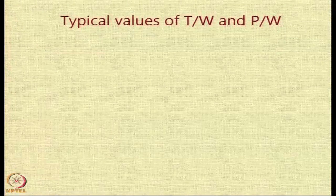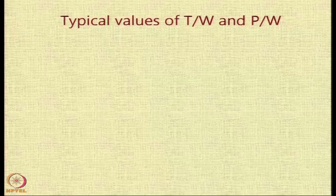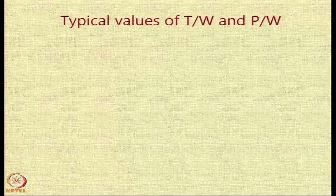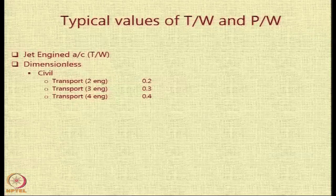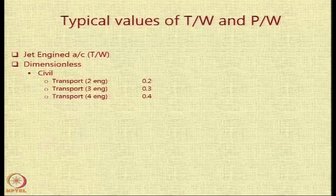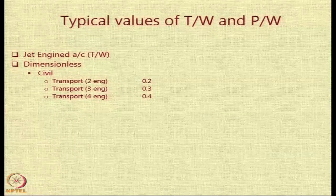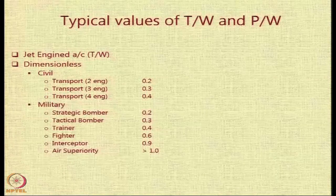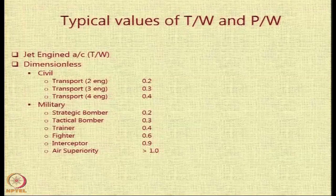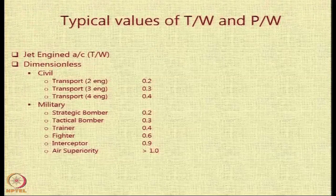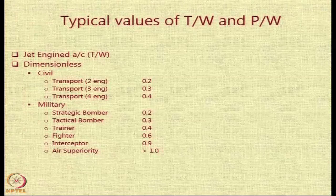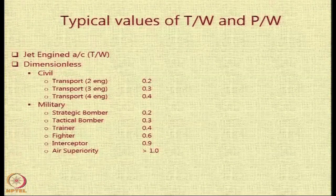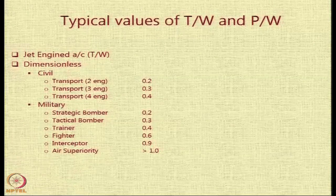From historical data, typical values of thrust-to-weight ratio for turbojet and turbofan aircraft are: 2 engines — 0.2, 3 engines — 0.3, 4 engines — 0.4. These are easy to remember and are typical values, though they could be higher for more critical requirements. For a military air superiority aircraft, the T/W is normally more than 1, meaning the total thrust can exceed aircraft weight, allowing vertical climb if needed.